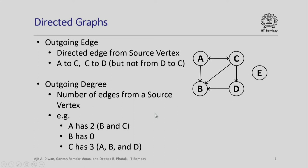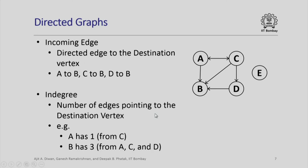As I mentioned, exactly similar concepts exist for incoming edges and in degrees. Incoming edge is nothing but a directed edge to a destination vertex. For example, if you look at B there is an edge from A to B, an edge from C to B, and an edge from D to B. So, B is the destination vertex and we define correspondingly a notion of in degree. These are the number of edges pointing to the destination vertex.